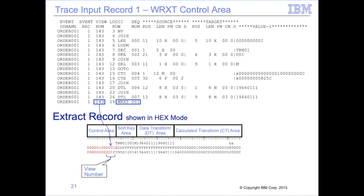The WRXT row adds information to the front of the extract record, including total record length, length of the SK and DT areas, and counts of the CT columns. These control fields are used by the format engine to process the extract record. The last field in this area, just prior to the SK area, is a binary version of the view number, stored as binary to conserve space in the extract file and optimize IO and storage. The view number is multiplied by 2, then 1 is added and converted to binary. Thus, in this example, view 143 times 2 equals 286 plus 1 equals 287, converted to binary is 11F hex.